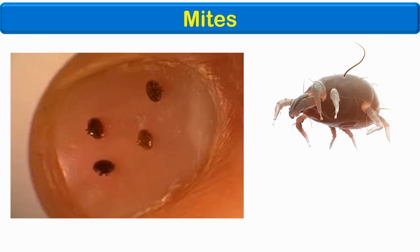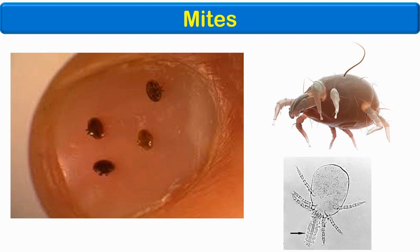Now let us cover the important arthropods and diseases transmitted by them one by one. These are mites — the vectors for scrub typhus. Mites are very small and the larvae, called chiggers, are not easily visible to the naked eye. The pathogen responsible for scrub typhus is Orientia tsutsugamushi, which is present in the chiggers right from their birth, acquired from their mothers by the trans-ovarial route. The chigger needs a blood meal to develop into its adult form, and humans are infected in this process when the chiggers bite them.